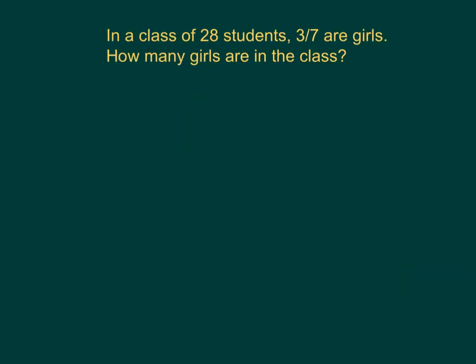Here we have a word problem. In a class of 28 students, 3/7 are girls. How many girls are in the class? Now work with me. Answer these as I ask the question. How many students are in the whole class? Right, 28. And what's the question? How many girls are in the class? What fraction of the whole class of 28 students are girls? Right, we have the fraction there, 3/7. So what's the expression that we're looking at to be able to solve? Hope you said 3/7 of 28.